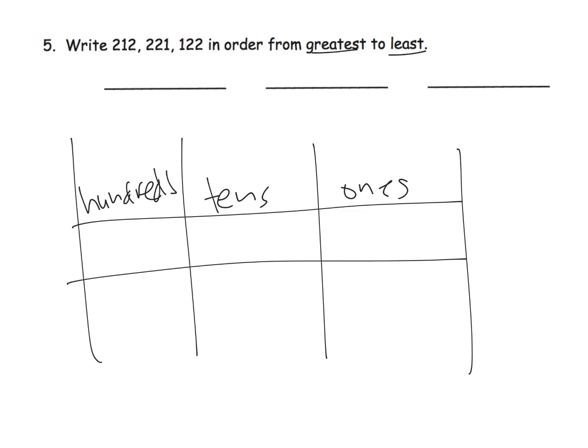It might help to take these numbers and write them in the place value chart. So 212 is going to look like this: two hundreds, one ten, two ones. And then let's do 221—this is going to be two hundreds, two tens, and one one.